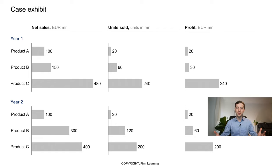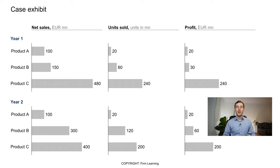Let's look into an example. Imagine the interviewer shows you an exhibit where the case context is that you are asked to look into opportunities for a company to grow its revenue and profit over the next years. The interviewer might ask: what do you see here? What do you make of this? Any implications you can draw? In my opinion, there are three quality levels of answers that candidates give.